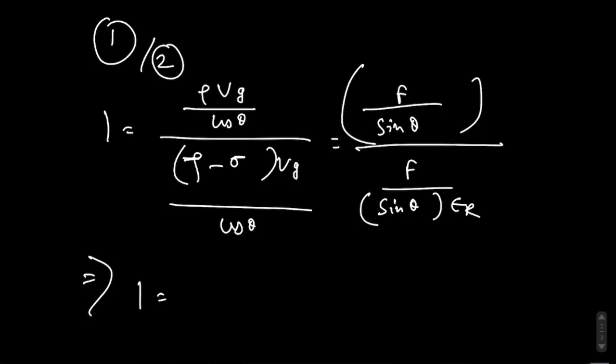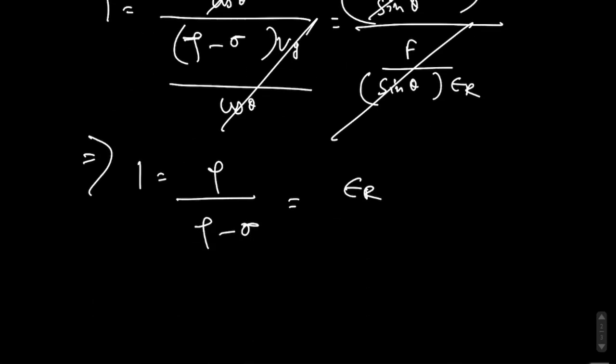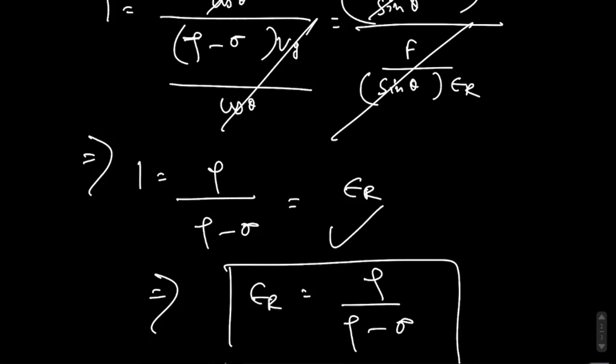F by cos θ cancel out. ρ by ρ minus σ equals to εr. So ρ by ρ minus σ equals to εr.